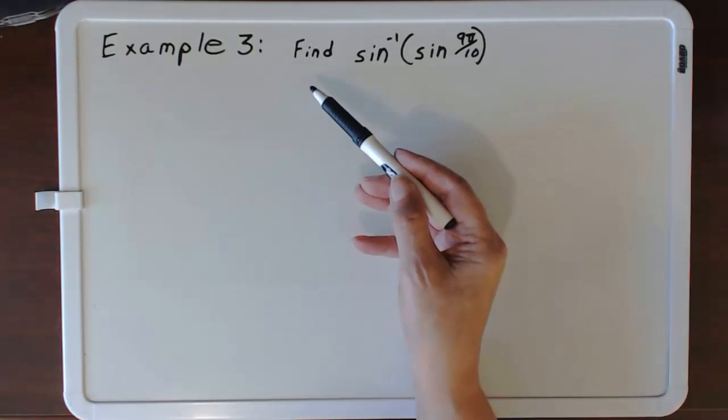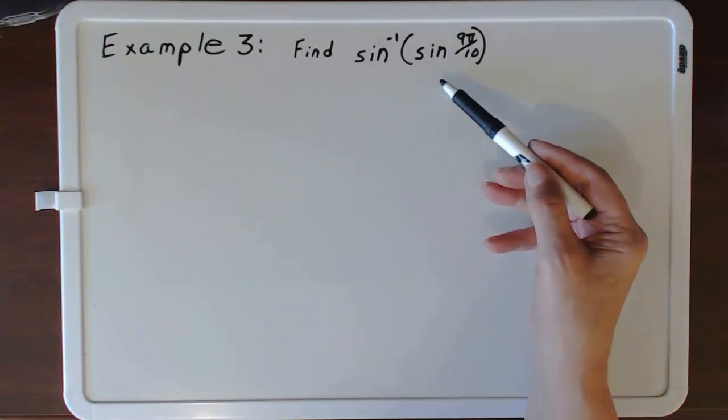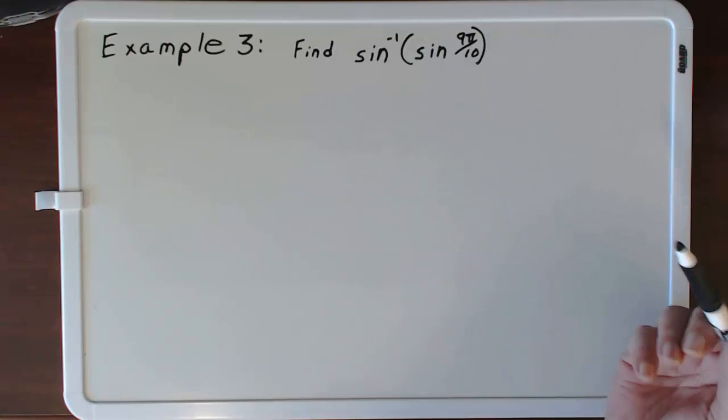Example 3. We're going to find the inverse sine of the sine of 9π over 10.